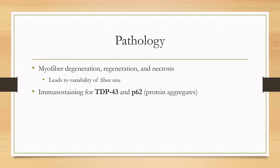These infiltrates will be T lymphocytes and macrophages. There can be myofiber degeneration, regeneration, and necrosis, leading to variability of fiber size. These muscle fibers will also immunostain for TDP43 and P62 protein aggregates.